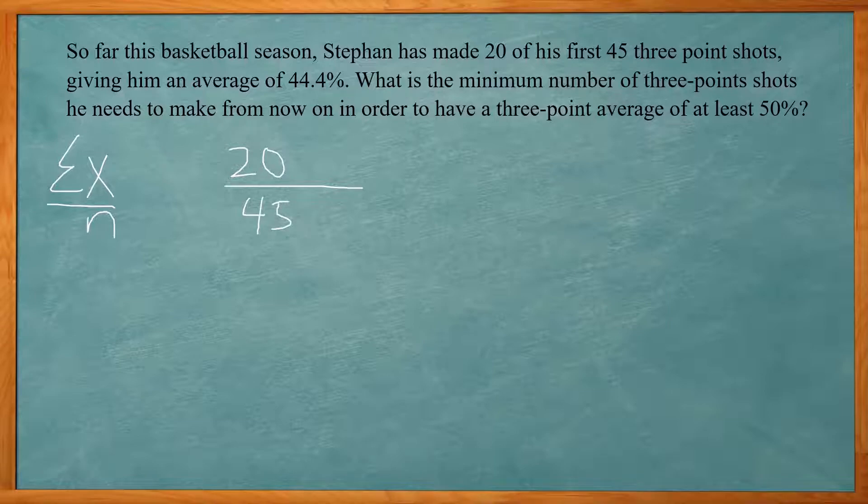Now he needs to make so many threes in a row to bring his average up to 50%. So x is going to be how many they attempted and how many that he makes. He's going to end up making all of them in a row. And that will bring up his average to 0.5, which is going to be the 50%. So the 50% divided by 100 gives you the 0.5. So again, I'm going to multiply 45 plus x on both sides.